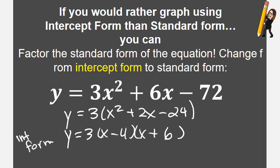Just by looking at this, I know my intercepts are gonna be four, zero, and negative six, zero, which means I know my vertex is gonna be at negative one, and I'd have to calculate the y value. Look how quick that becomes.